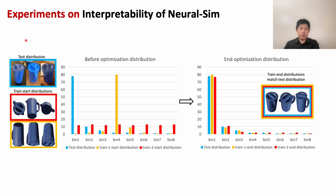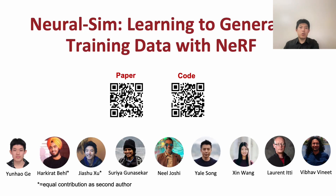We also conduct experiments to show the interpretability of NeuralSim. Before optimization, the test distribution — which dominates in bin 1 — has a large gap with the training distribution, which is uniform across other bins. But after our optimization, we can guarantee our generated images have the same distribution as the test domain. Our code is released. Thanks for listening.